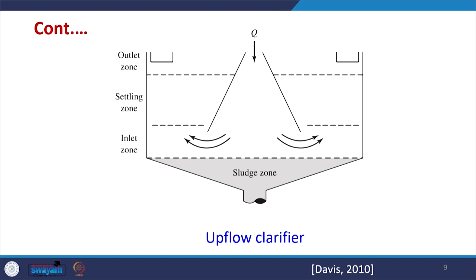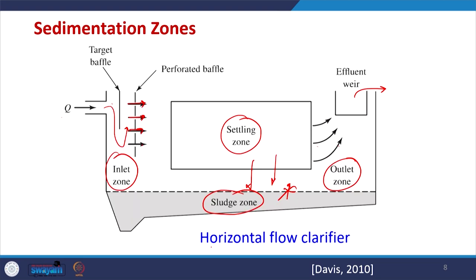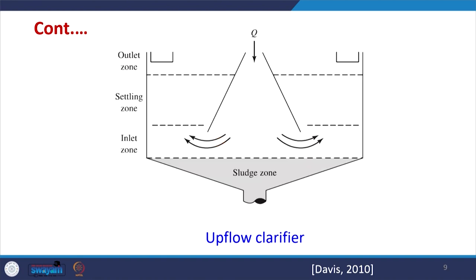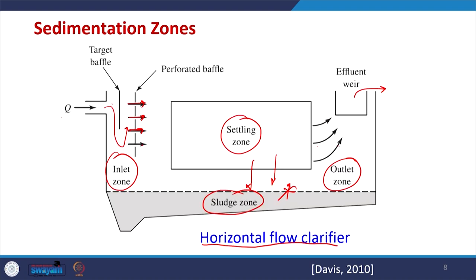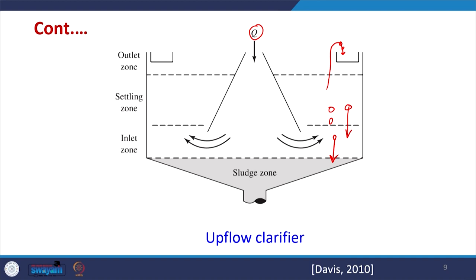Similarly, for an upflow clarifier, the same zones apply. In a horizontal flow clarifier the zones are arranged horizontally, while in an upflow clarifier the inlet is from the bottom — or another design feeds from the top — the particles settle downward, and clear treated water with fewer particles goes into the outlet zone and exits.